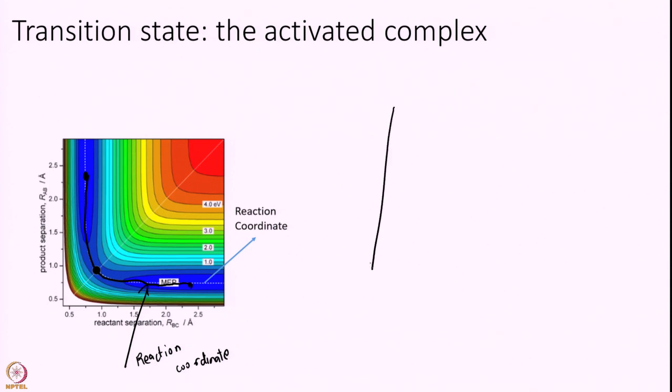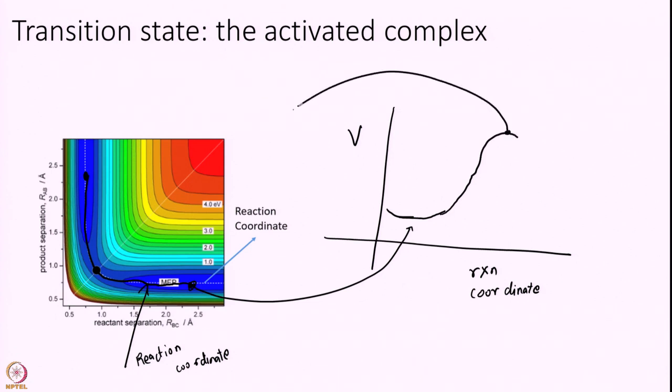If I draw my potential, a 1D potential along the reaction coordinate, then what will you get? When I am at the reactant you are getting some kind of a minima here. This point corresponds to this. My energy increases to transition state. This point is the same as this point and eventually it decreases like this.